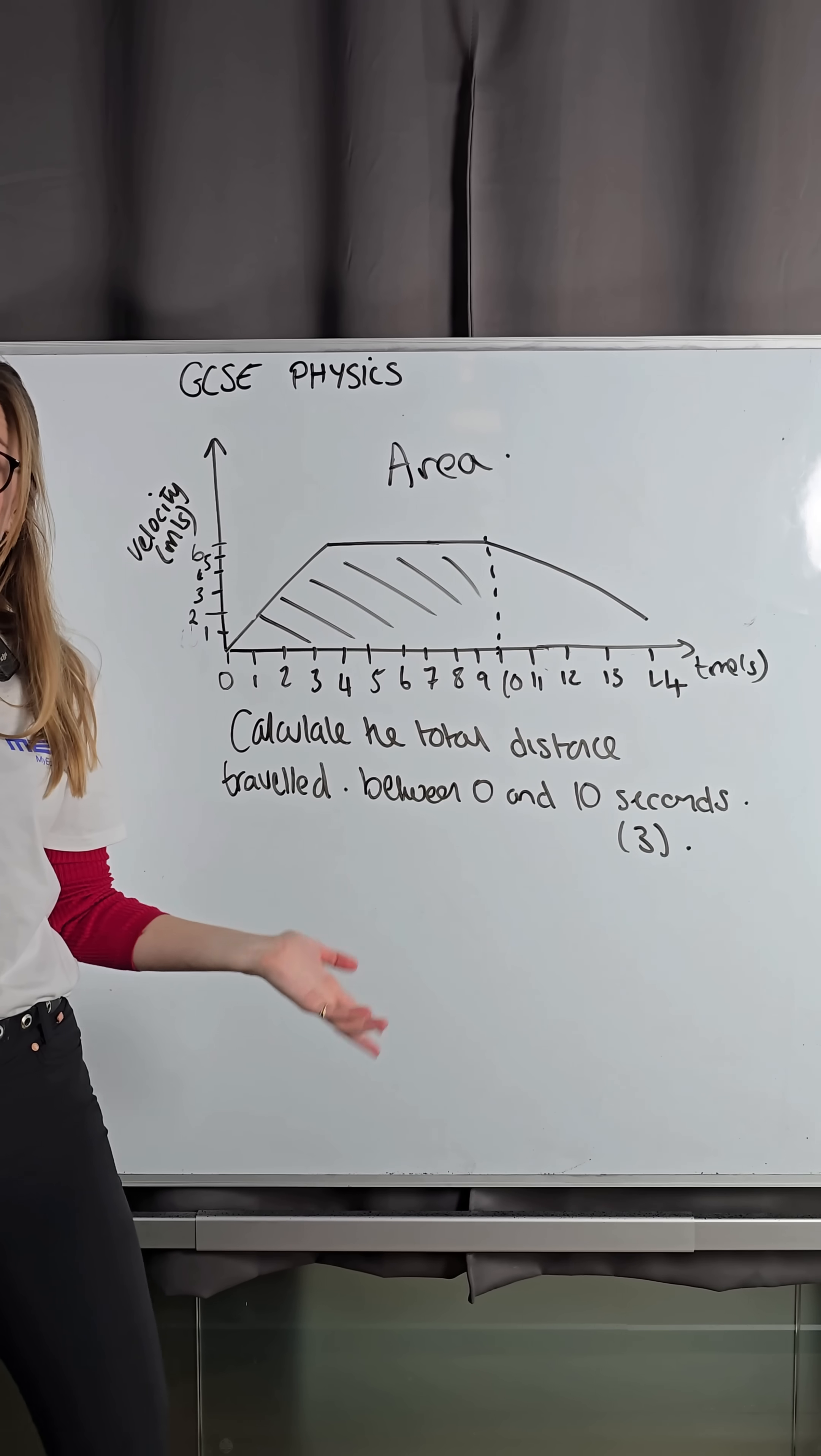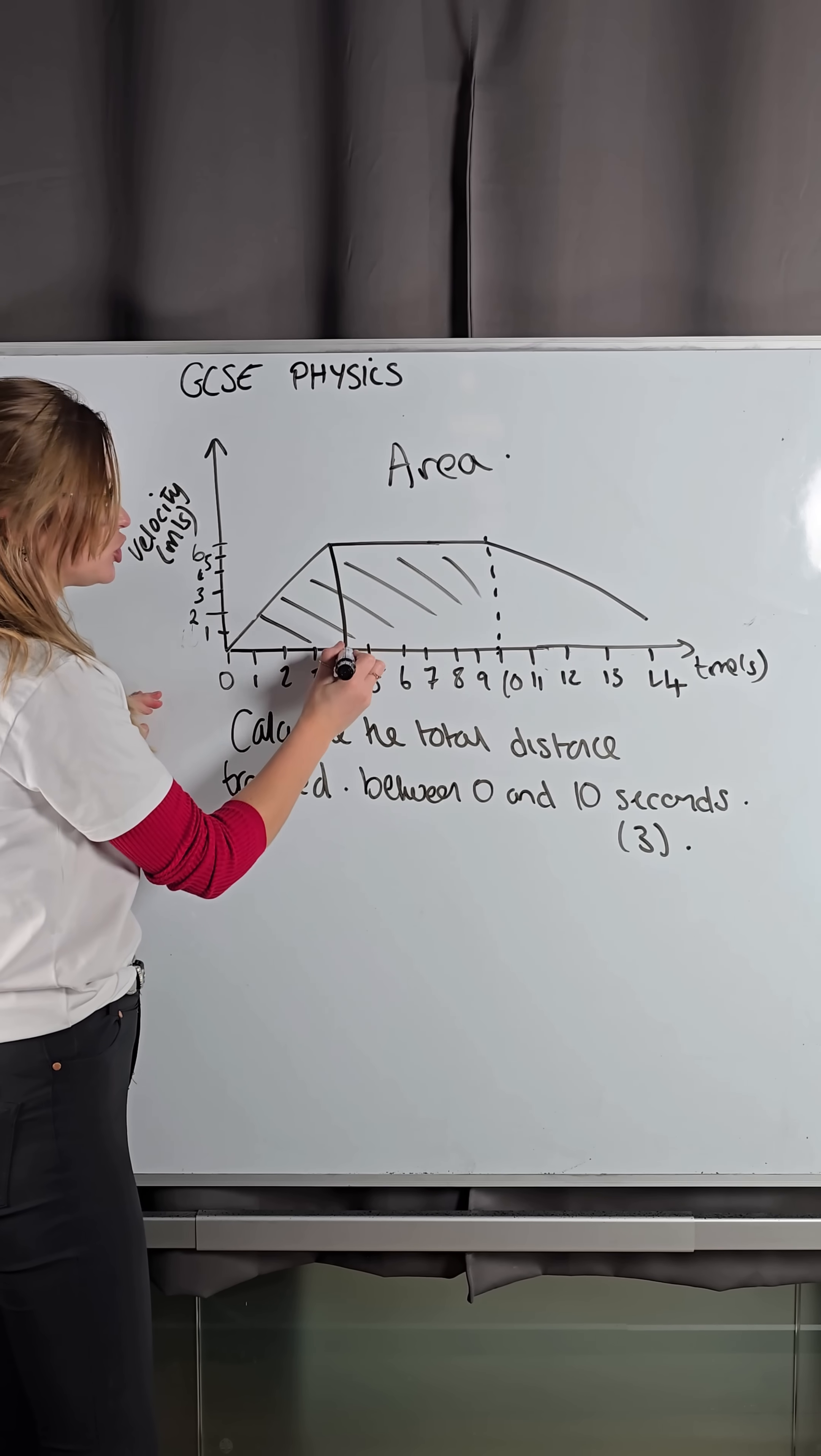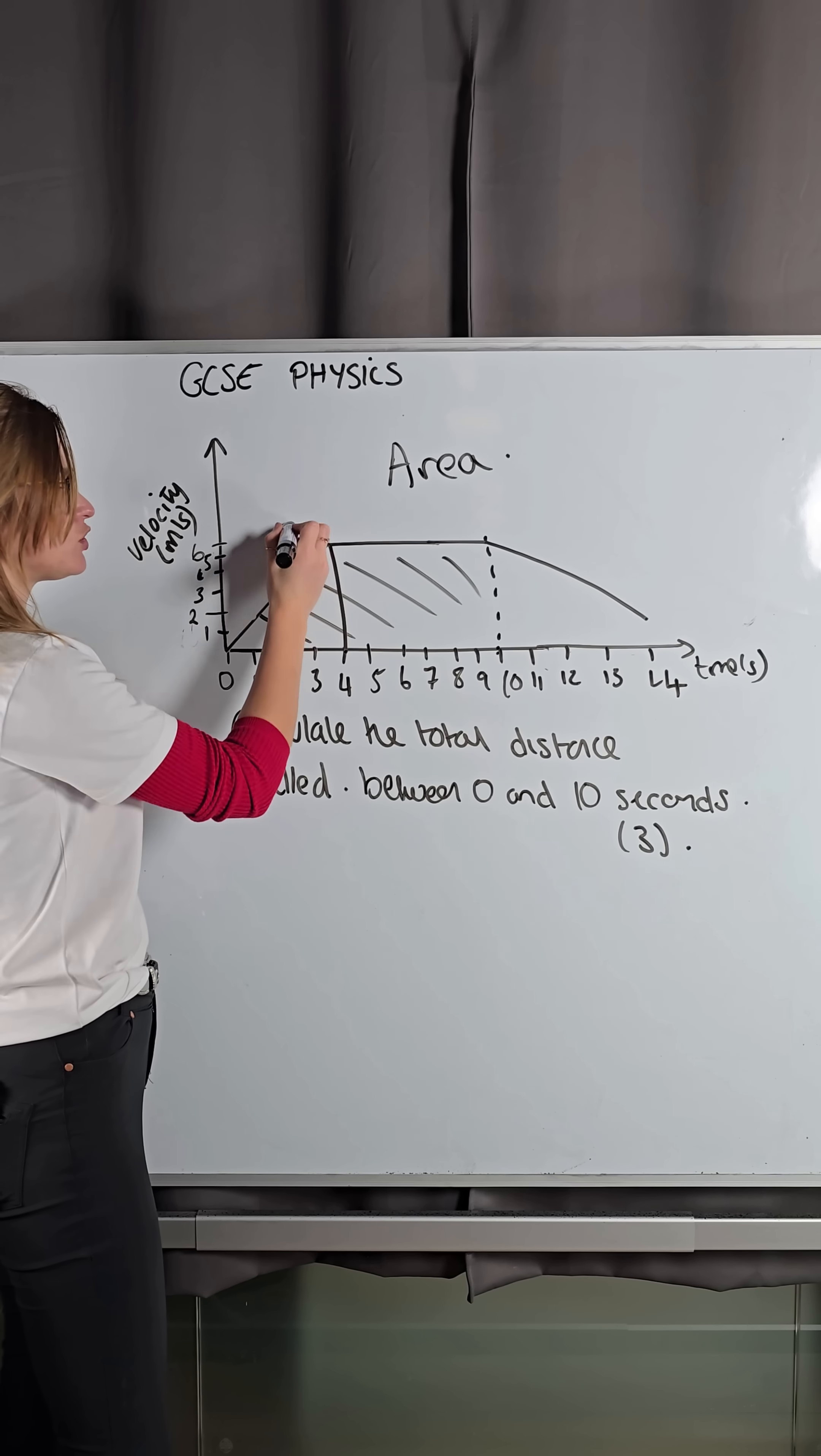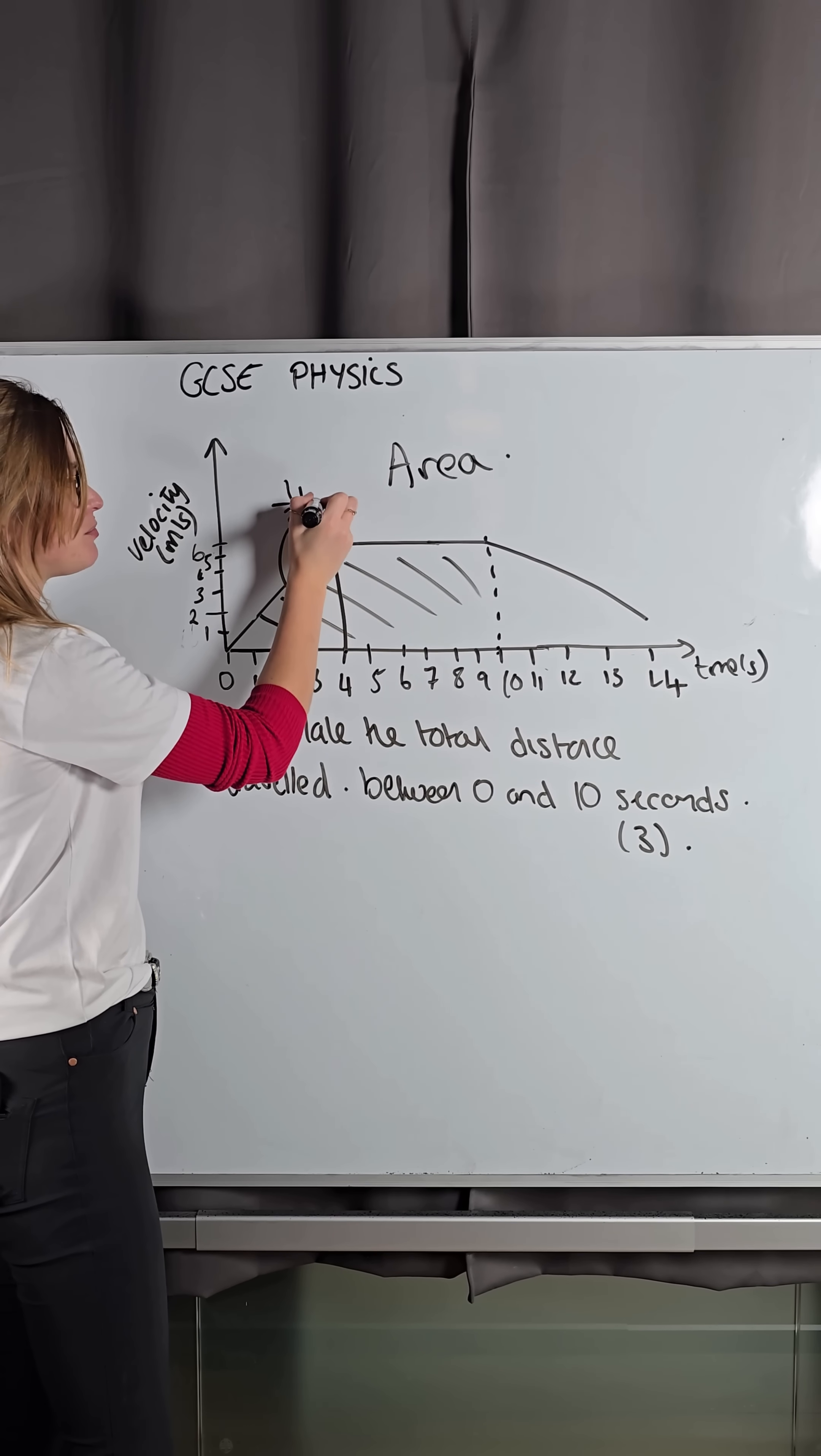Now, you can either be really good at maths and you think, I know how to find the area of a trapezium. Or like me, just make your life easy. So we split up into a triangle and a rectangle. So I know to find the area of a triangle, and you need this for physics, the area of a triangle is a half of the base times the height.